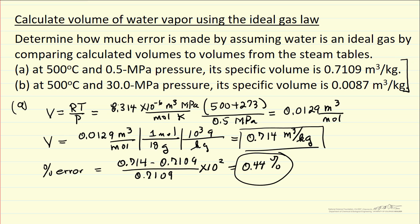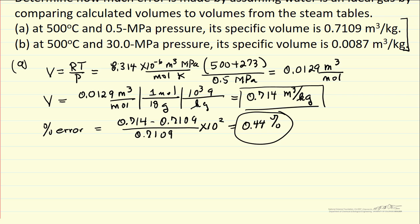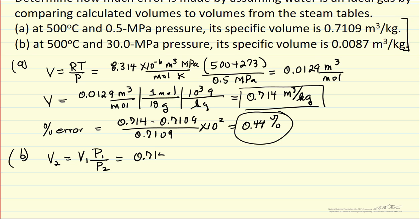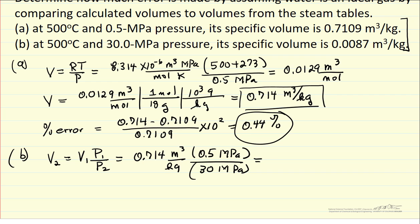Let's make the comparison at the higher pressure now. We don't have to repeat all the calculations — we can take volume 2, the volume we just calculated, and correct for the pressure. So 0.714 cubic meters per kilogram at 0.5 megapascals is the calculation we just did. We're now interested in the volume at 30 megapascals, and that number is 0.0119 cubic meters per kilogram.